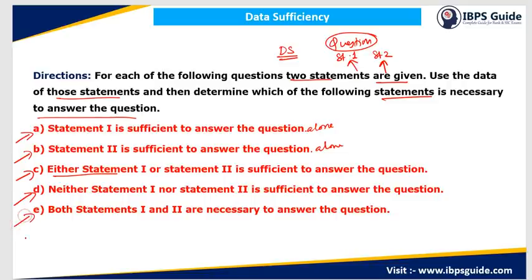Option E means both statement 1 and statement 2 together are necessary to answer the question. That is, I cannot answer the question individually using statement 1 or 2, but when I combine these two statements together, I am able to answer the question. Then I will go for option E.